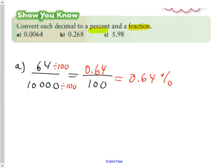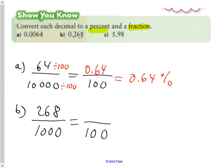Now for question B, again, tenths, hundredths, thousandths, it is 268 thousandths when I interpret that decimal as a fraction. And since I want to go to a percent, I need to make that equivalent fraction out of 100. This time, I'm not going to divide by 100. What am I going to divide by?